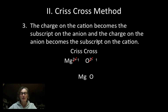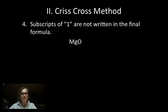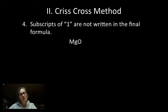Next, I'm going to actually do the crisscross. The charge on the cation is going to become the subscript on the anion. The charge on the anion becomes the subscript of the cation — crisscross. Subscripts of one are not written in the final formula, so my final formula will simply be MgO. The substance is called magnesium oxide.